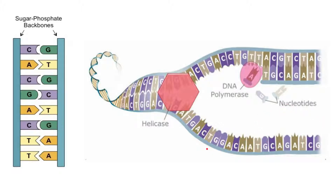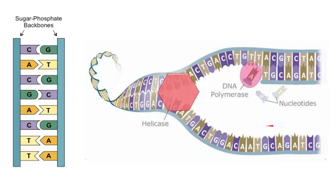This form of DNA replication is called semi-conservative DNA replication. In each of the two new DNA molecules, there is one original parental strand — which served as the template — and one new strand. So each resulting molecule retains one strand from the original DNA alongside one newly synthesised strand.